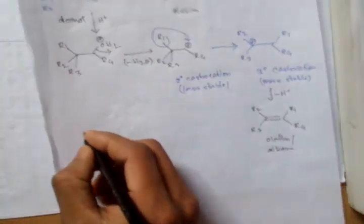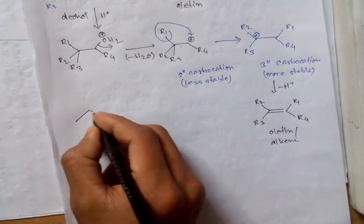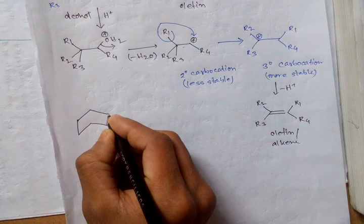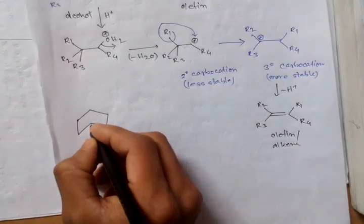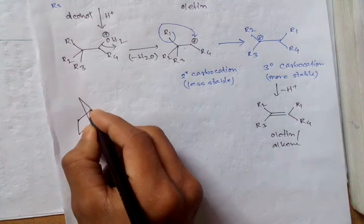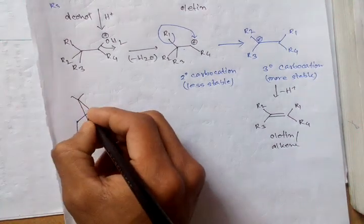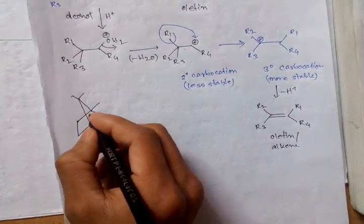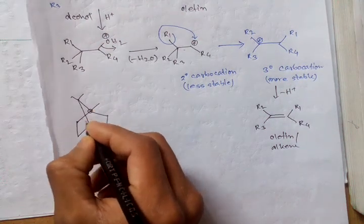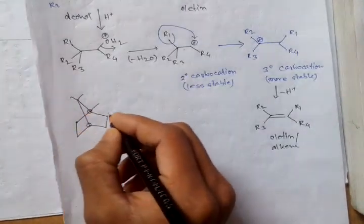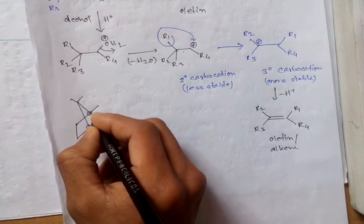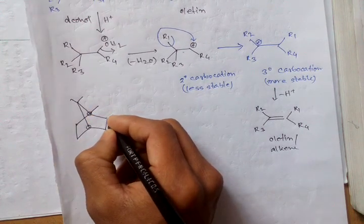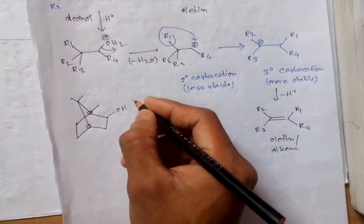When a bicyclic compound, this one undergoes Wagner-Meerwein rearrangement. Here, methyl group, this BZ position. This one and this one, BZ carbon atom. BZ position. And this methyl group attach with BZ carbon position. And here, OH, alcohol.